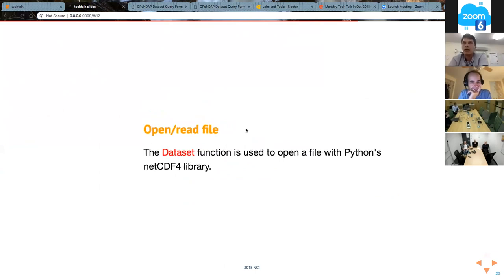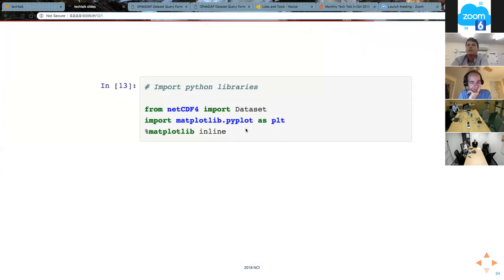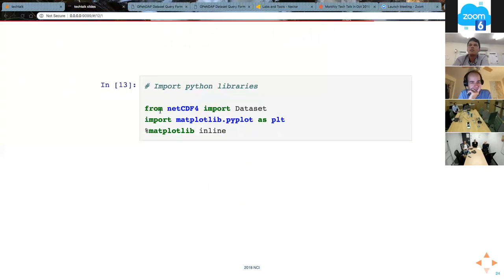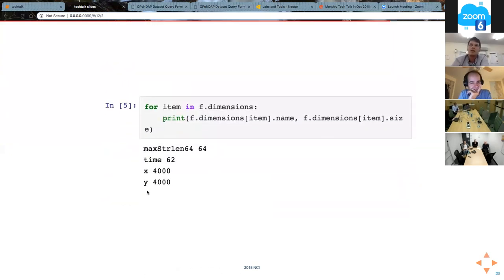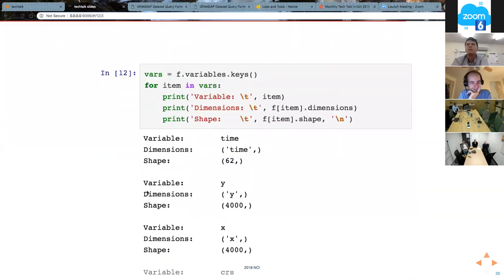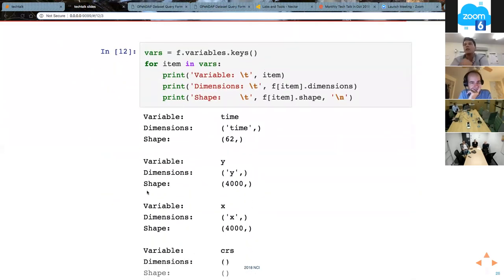The examples I have are in Python, and we're going to open the files using the dataset function. Typically you would import from NetCDF4 the dataset function. This would be your OpenDAP link, and then you could open using the dataset function. From there, you can look at the metadata, what are the dimensions in the file, what are the variables and the like. I'll just quickly go through a couple of examples.